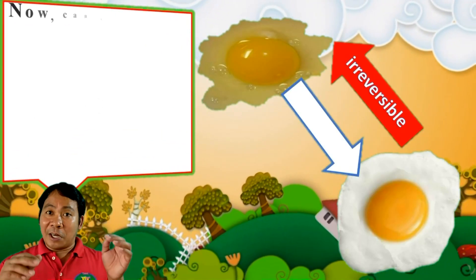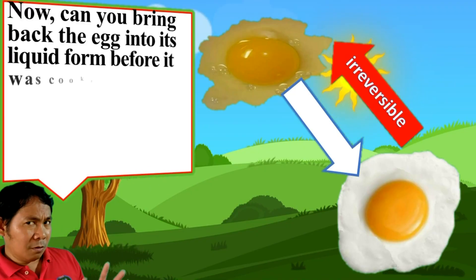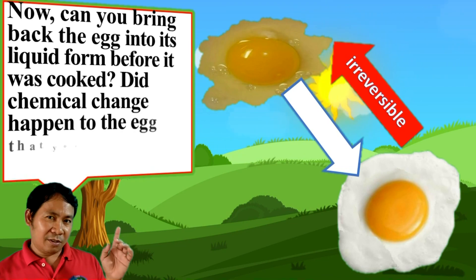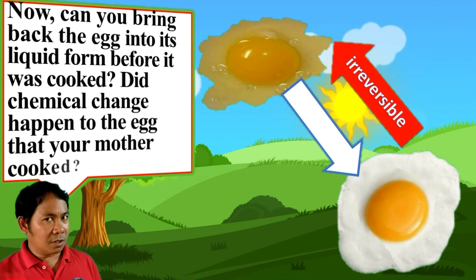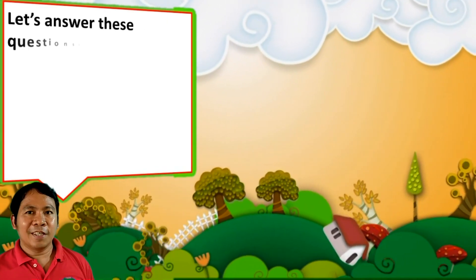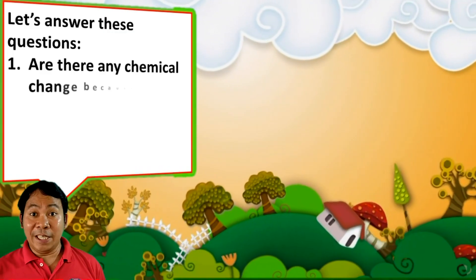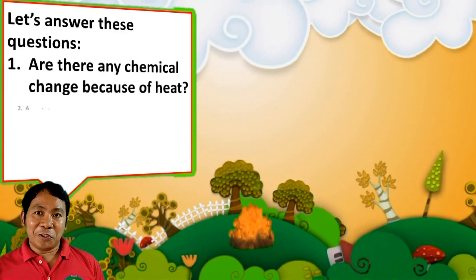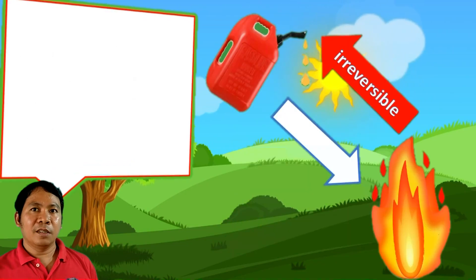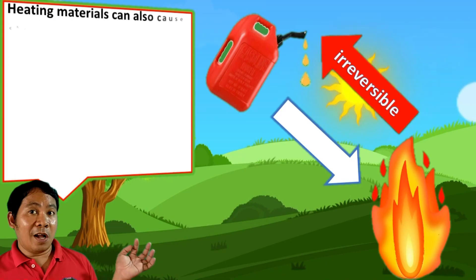Can you bring back the egg into its liquid form before it was cooked? Did chemical change happen to the egg that your mother cooked? Let's answer these questions: Are there any chemical changes because of heat? Are all changes caused by heat reversible? Why?